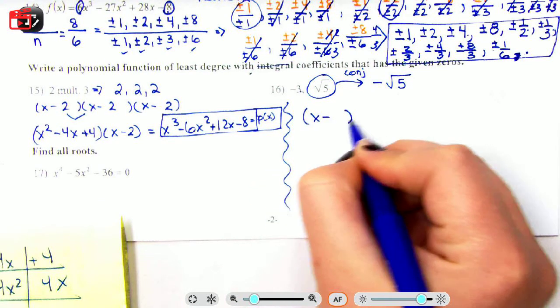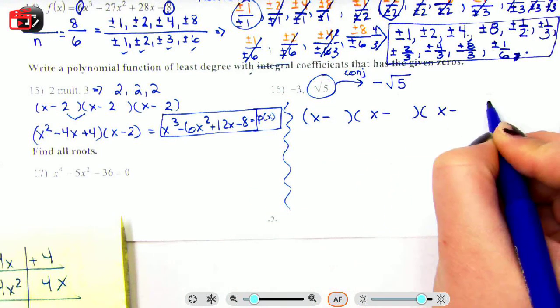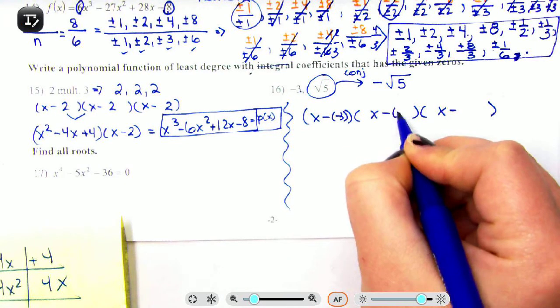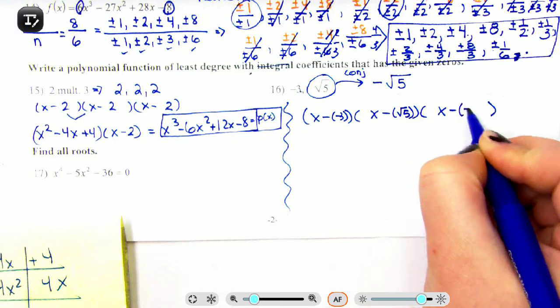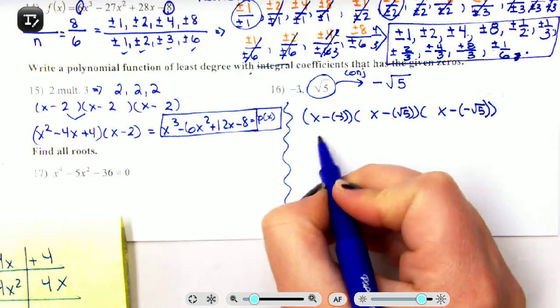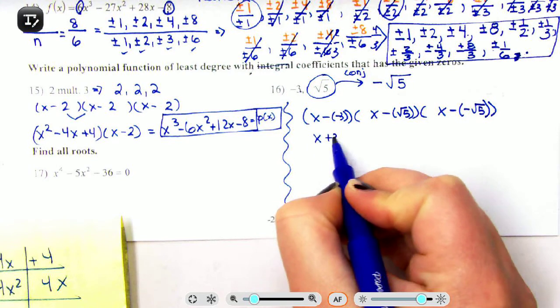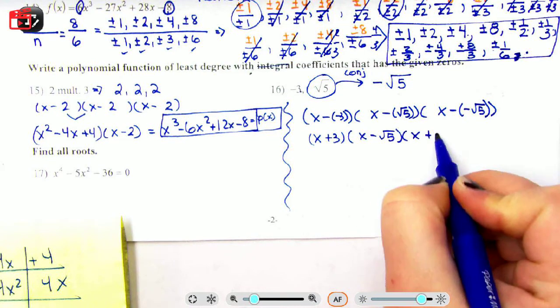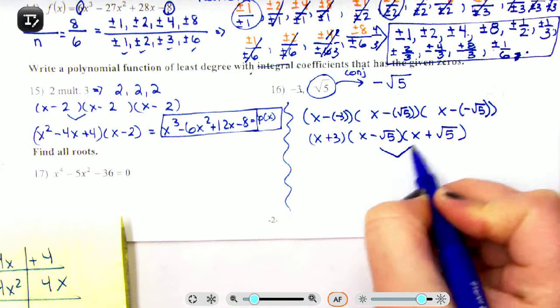We're probably gonna have to do number 17 on a separate sheet of paper. You're doing (x - ) three times because you have three roots. So minus negative 3, minus √5, minus negative √5. Make sure you're putting it in parentheses, especially if you have negatives. So we have (x + 3), (x - √5), and (x + √5).